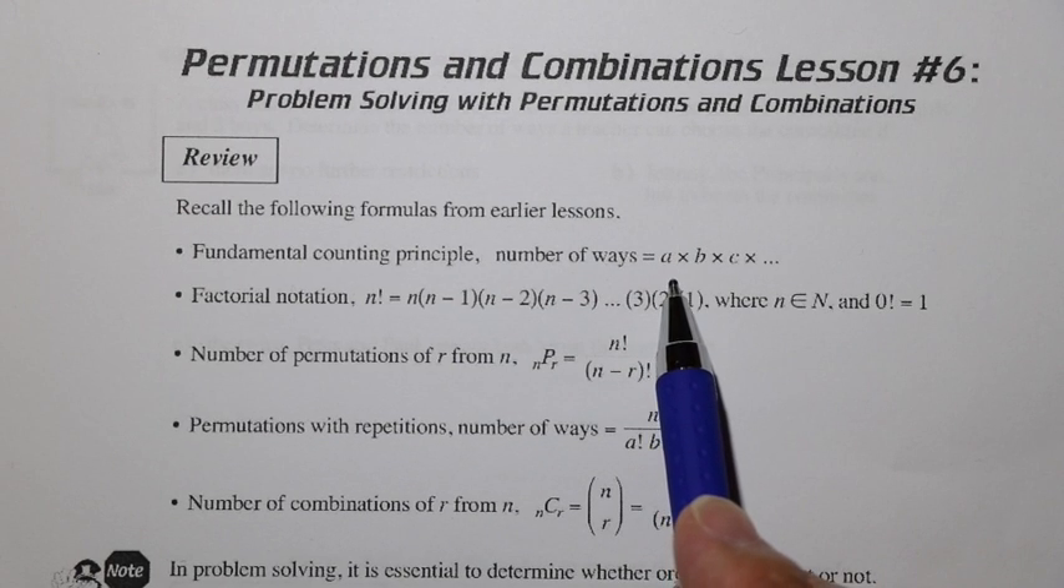Now just for review, remember we're talking about fundamental counting principle, which tells us that the number of ways to do things, if we do all of them, is A times B times C. We can think of these as columns, as stages. Stage one is A many ways, stage two is B many ways, stage three is C many ways, and the total number of ways to do all of them is going to be the multiplication.